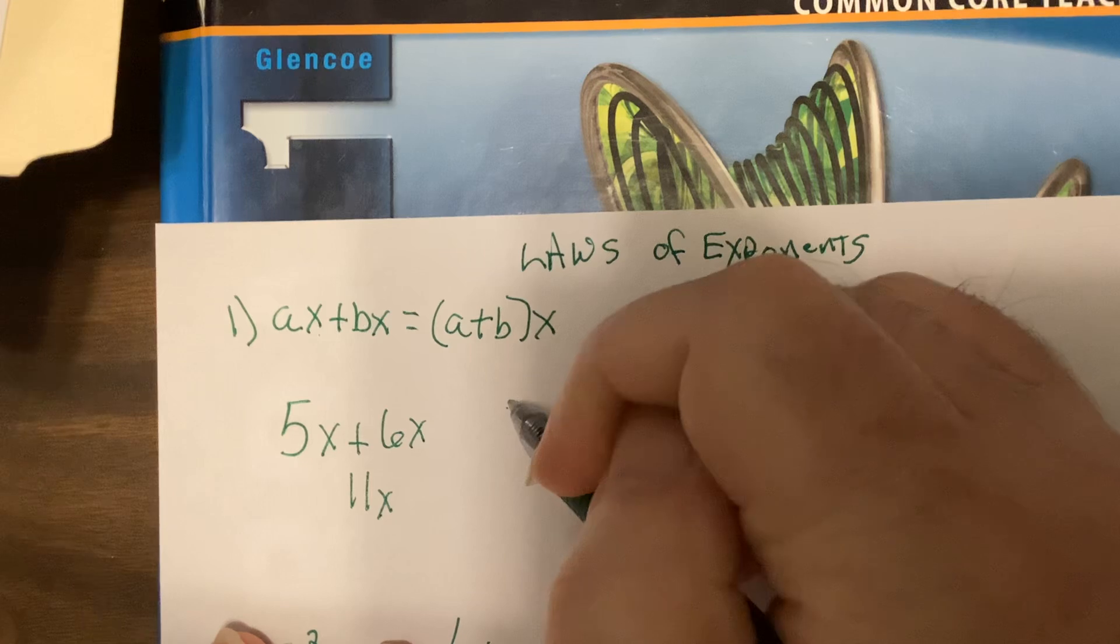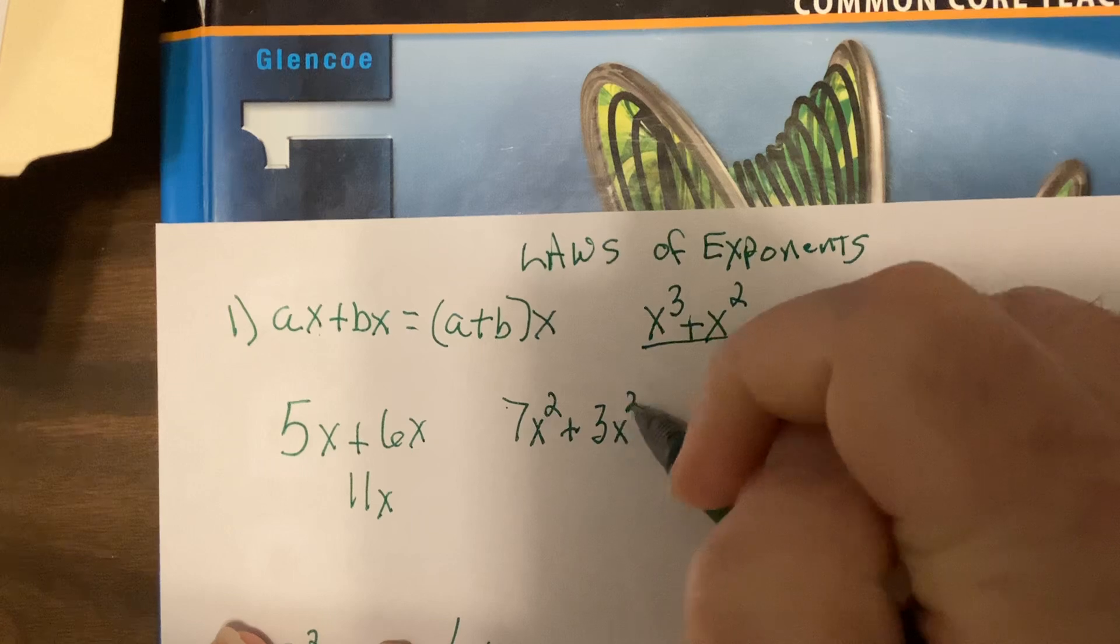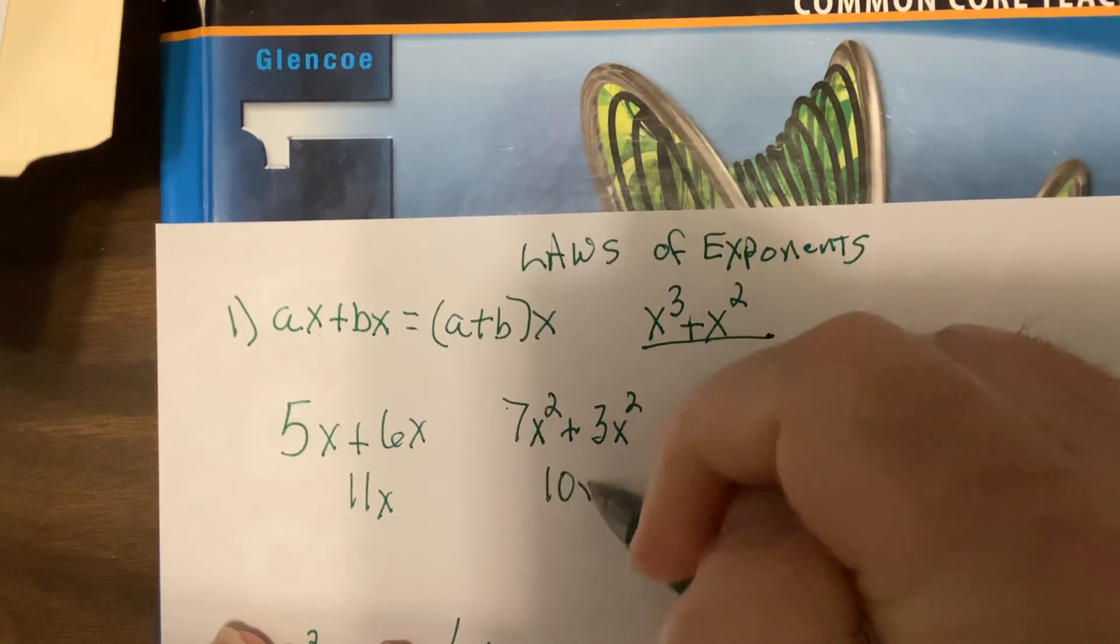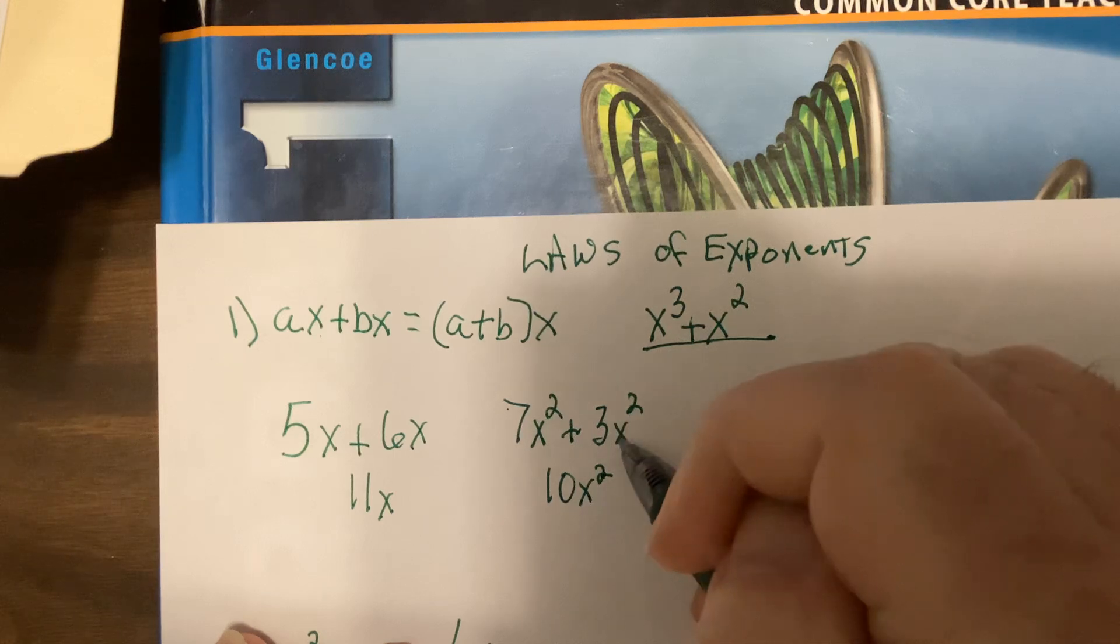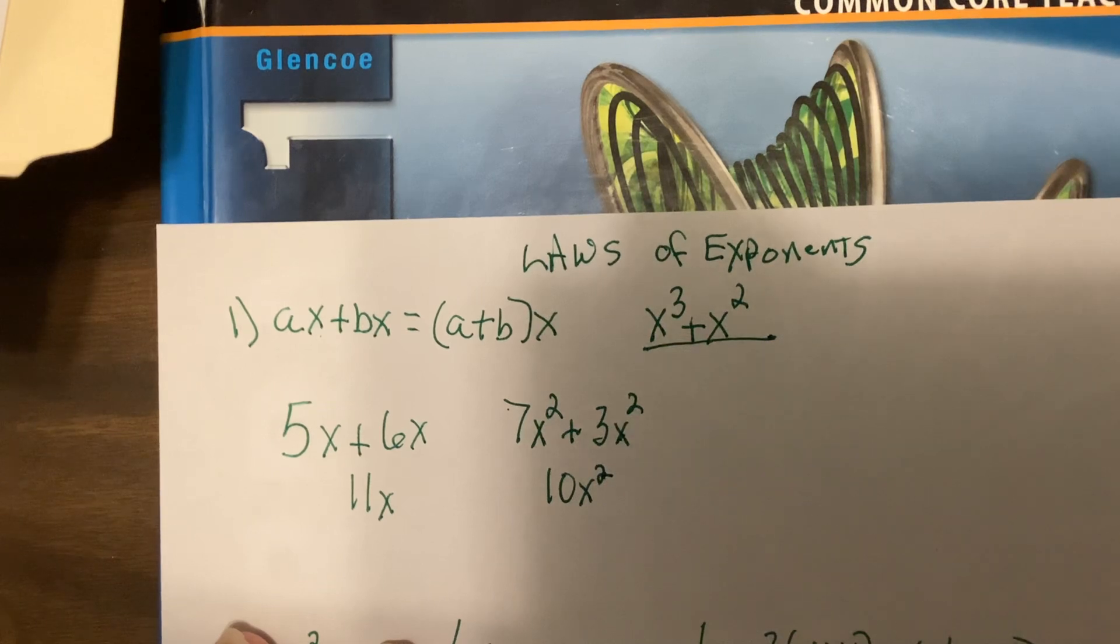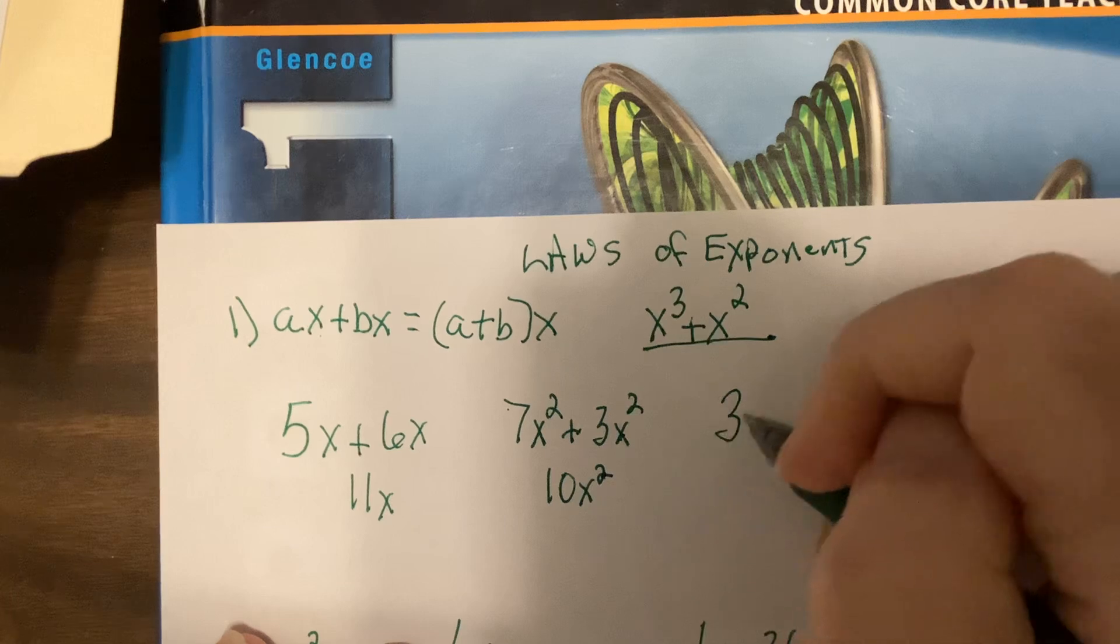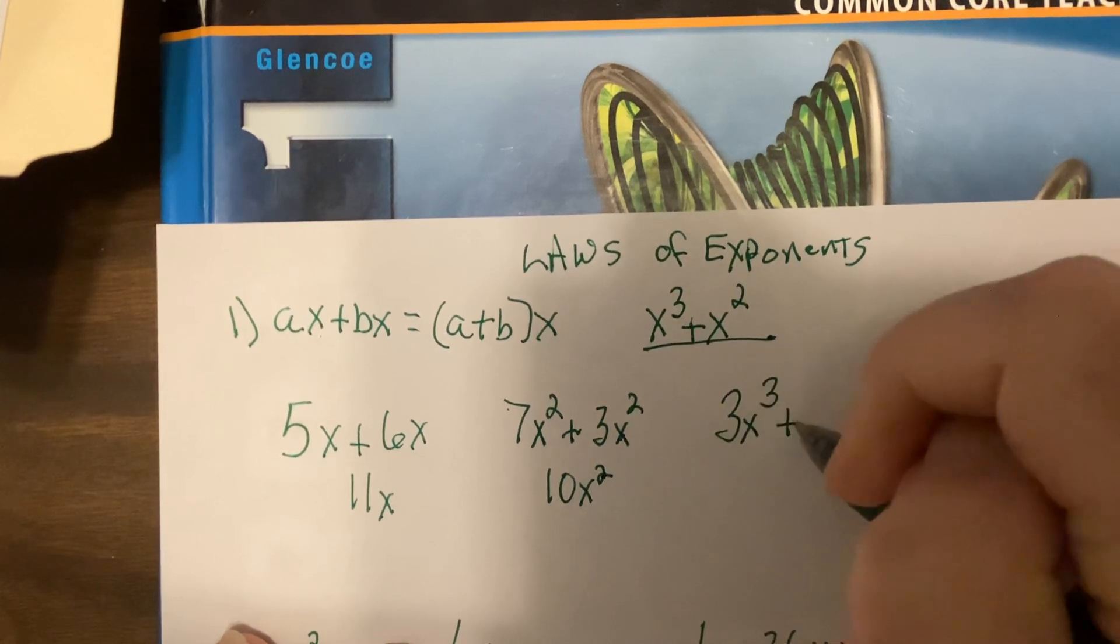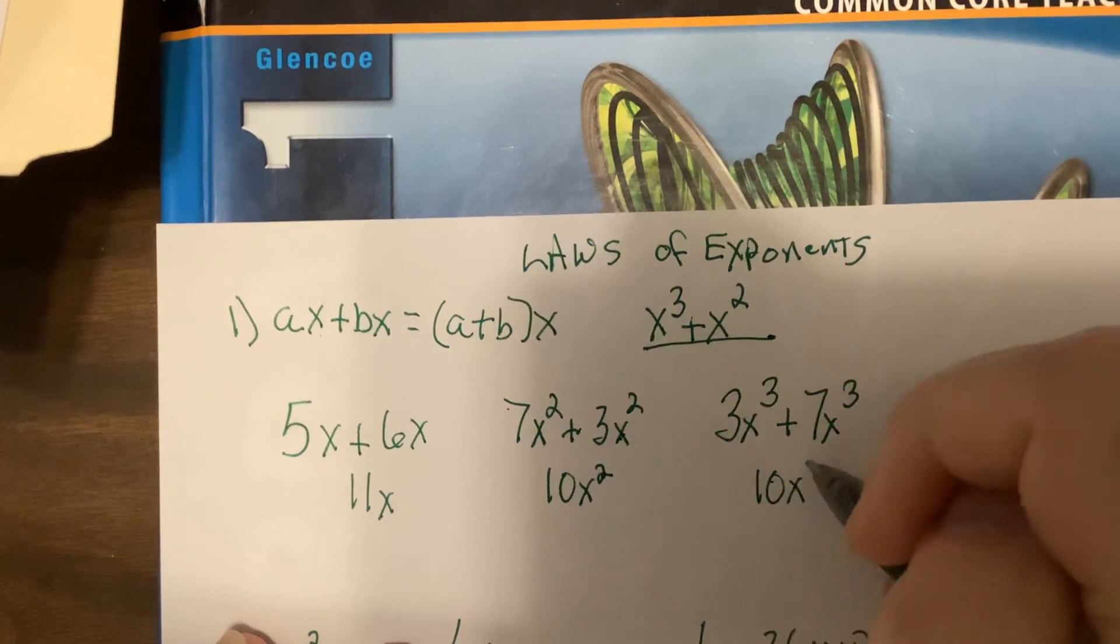If I had 7X squared plus 3X squared, that'd be 10X squared. Notice the power didn't change because power has to do with the number of bases to multiply together. So if I had 3X cubed plus 7X cubed, that would be 10X cubed.